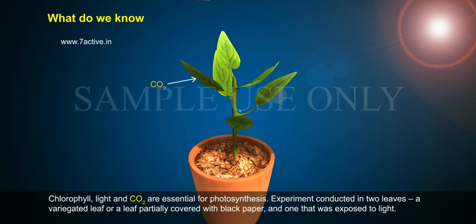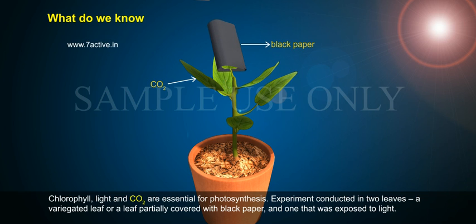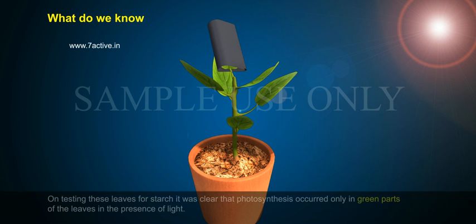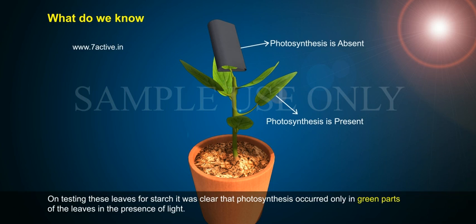An experiment was conducted using two leaves: a variegated leaf, or a leaf partially covered with black paper, and one that was exposed to light. On testing these leaves for starch, it was clear that photosynthesis occurred only in the green parts of the leaves in the presence of light.